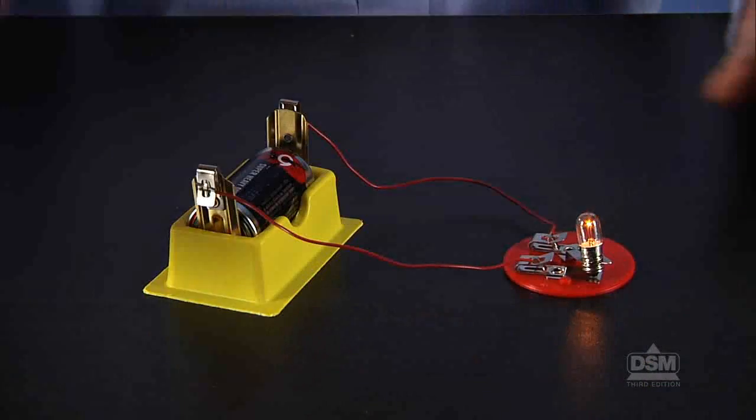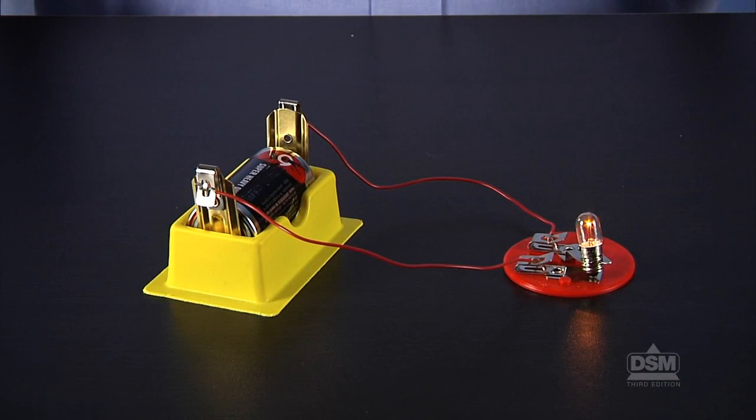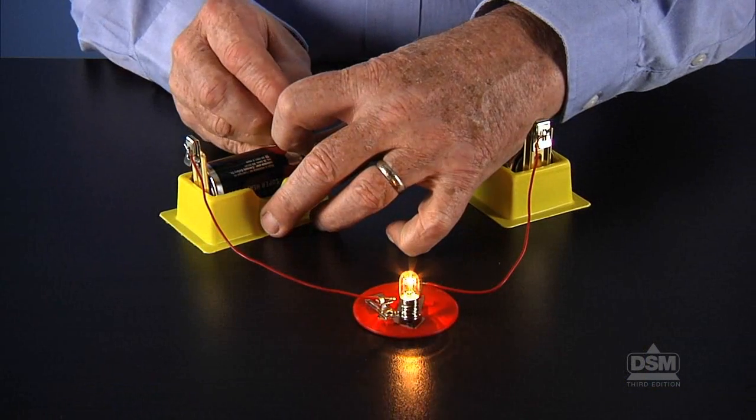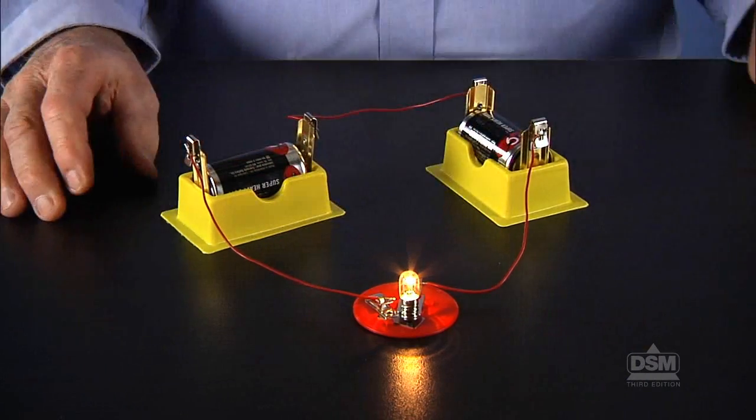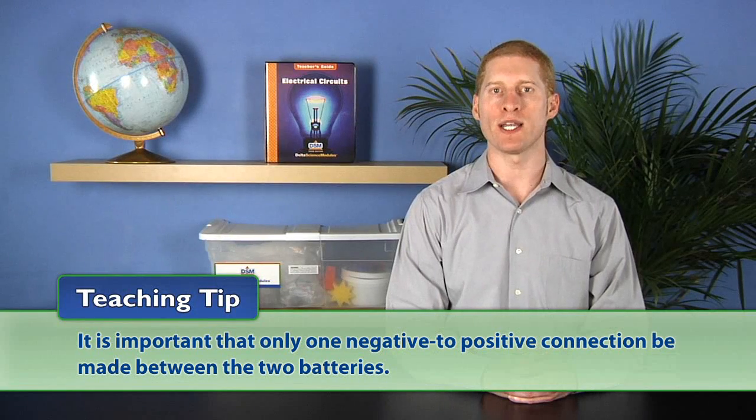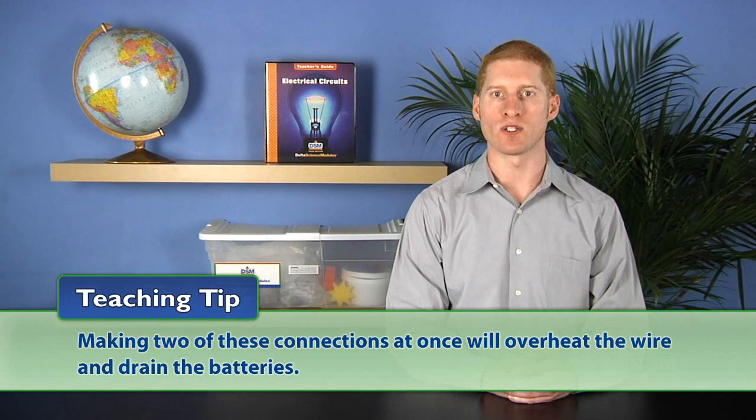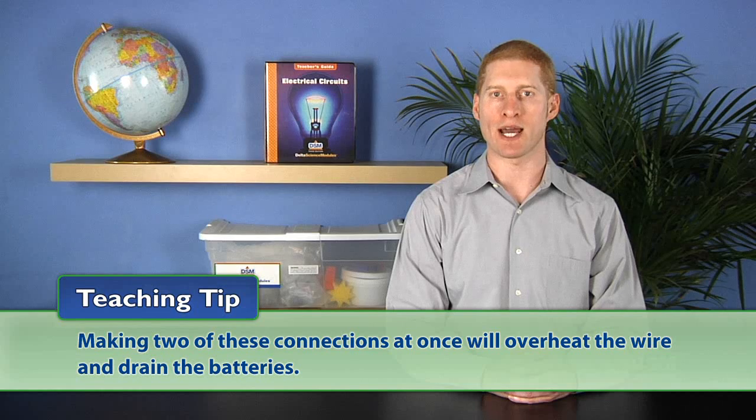Next, demonstrate for the class how to place batteries in the holders and how to attach the wires to the electrical clips, and then explain that in order to build a two battery circuit, they should connect the negative end of one battery to the positive end of another battery. It is important to make only one negative to positive connection between the two batteries. Making two of these connections at once will overheat the wire and drain the batteries.